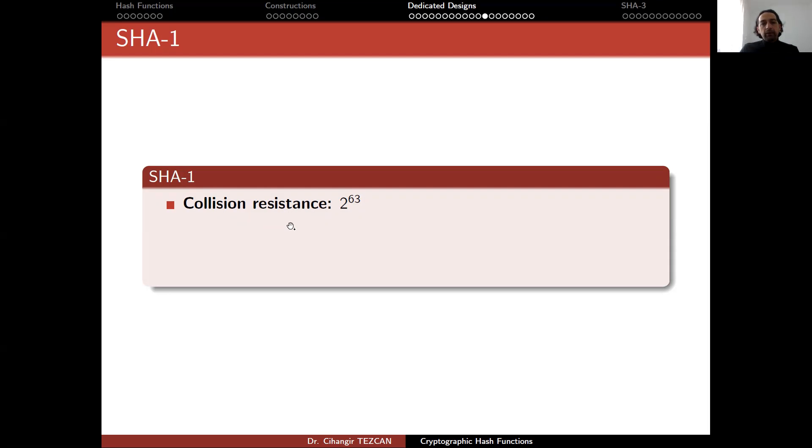Years ago, Wang obtained a theoretical attack that would require 2 to the 63 SHA-1 operations. But nobody was able to practically perform this attack because although you can perform that many SHA-1 operations, you also need to keep the hash values in the memory and sort them and check if there's a collision.